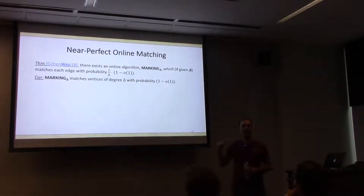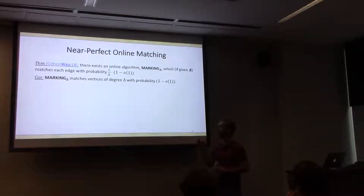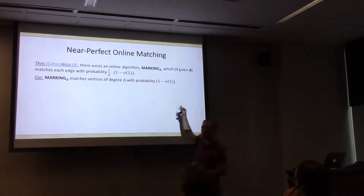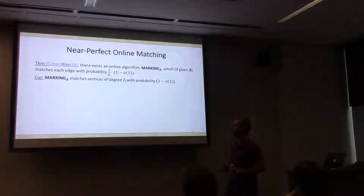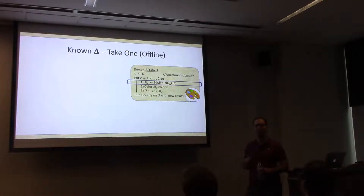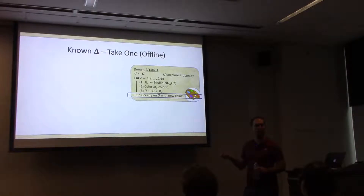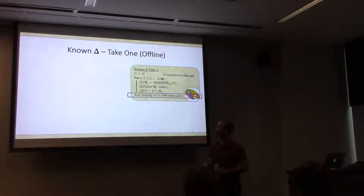Intuitively, every node of max degree in every iteration previously had its degree decreased by one, so the max degree went down by one per step. The hope is that we'll match all max-degree nodes with probability close to one, and therefore decrease the max degree with probability close to one. Here's the general approach: instead of computing a perfect matching in the uncolored graph, we run Marking-Delta. After delta iterations, we hope the max degree is little-order-of-delta, then greedy cleans up what's left.